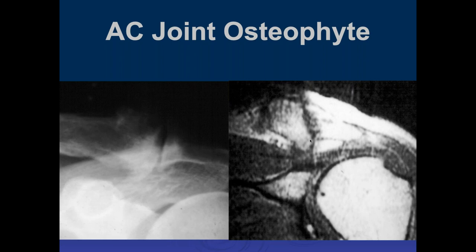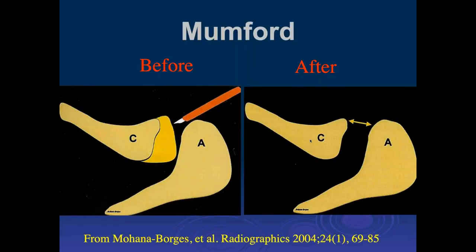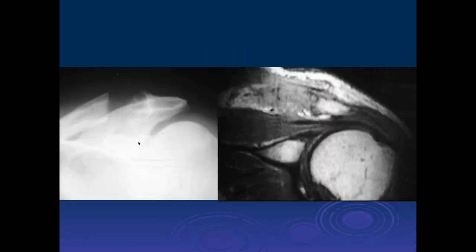Classic treatment for distal clavicular osteophytes is the Mumford procedure—removing about the distal 10 millimeters of the clavicle, resulting in a widened AC joint space. Sometimes surgeons only shave off the osteophyte, as was done in this case. You can't remove too much more than that without risking the CC ligaments and causing instability. The Mumford procedure has since been modified in many ways, especially arthroscopically.